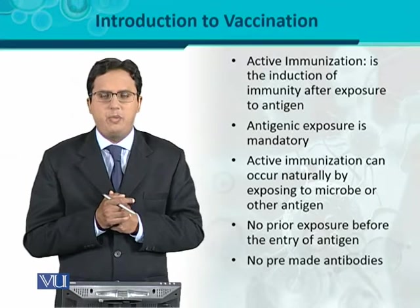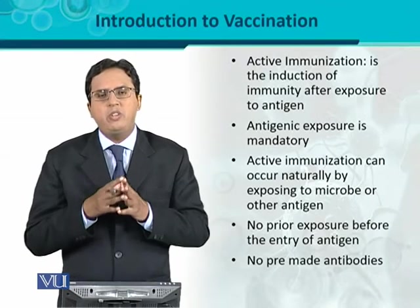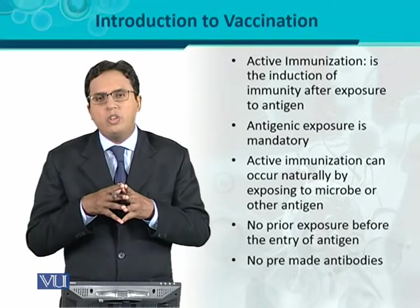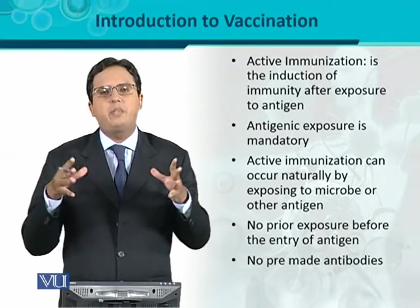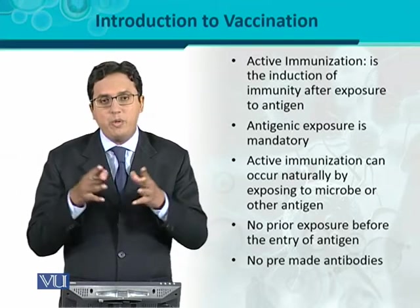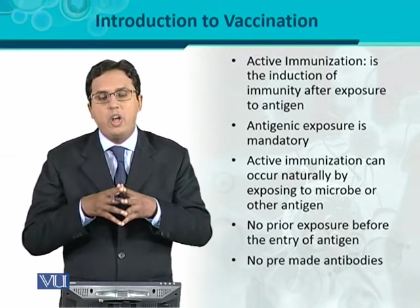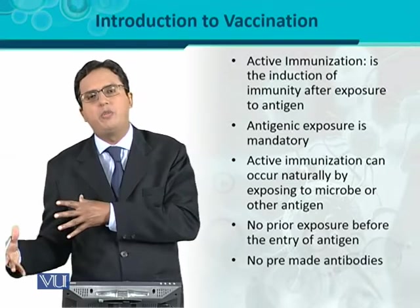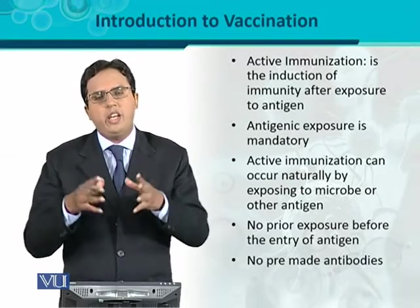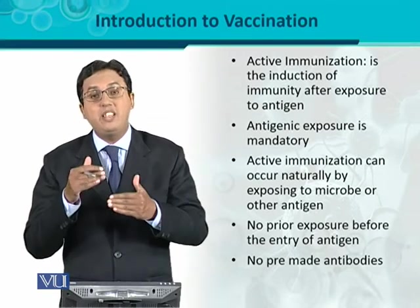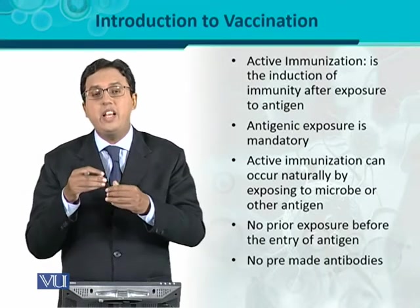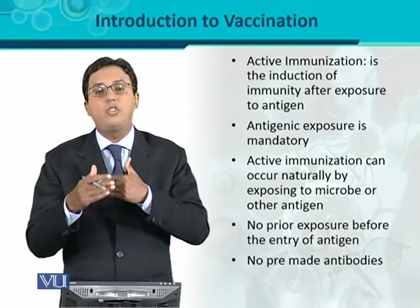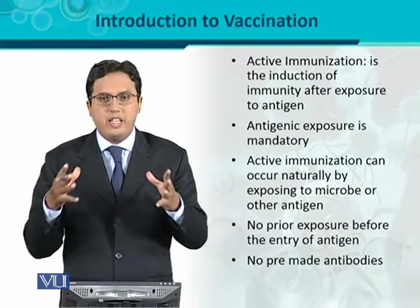There would be no pre-made antibodies. This means that antibodies against those antigens will not already be formed, because there is no prior exposure to such specific antigens. If there is no exposure, then how can antibodies come? Because antibodies will only form when the antigen is exposed and the immune system is activated. In active immunization, the immune system should not have been exposed to antigens before, and as a result there should be no pre-formed antibodies against such antigens.